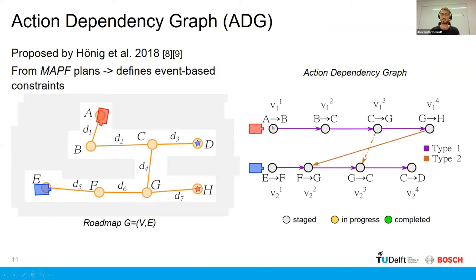And then we have an action dependency graph shown here on the right. And what this dependency graph basically shows is that the vertices of the ADG here represent events like a transition event in the roadmap. And then a directed edge basically means that the tail, the event in the ADG at the tail must be completed before the event at the head of the edge is completed. And this kind of encourages the ordering of AGVs when they occupy the same vertex.